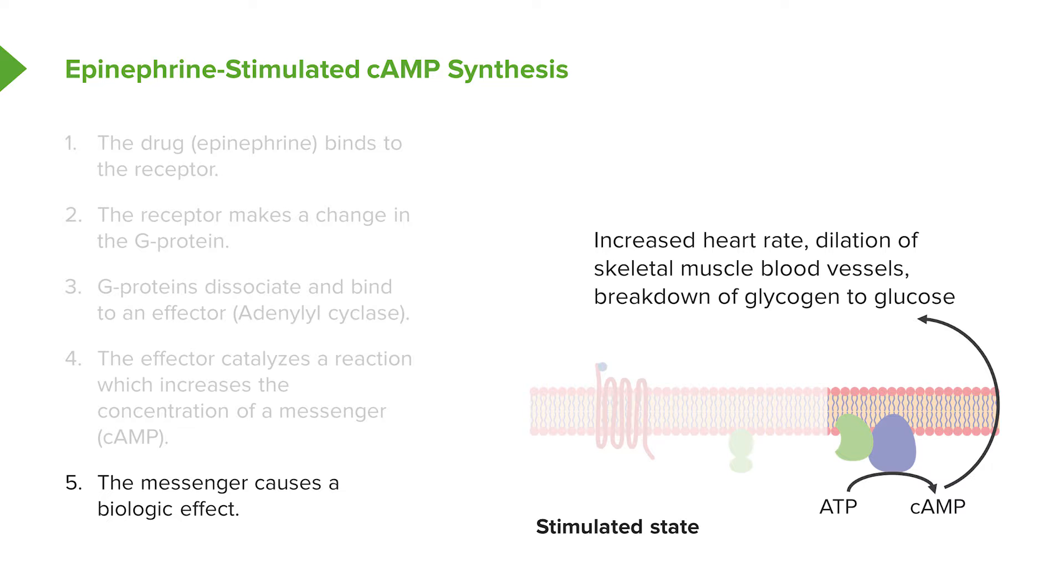Now that cyclic AMP causes a biological effect. In this particular case, we're talking about an increase in heart rate, or a dilation of skeletal muscle, or it could be a breakdown of glycogen to glucose, depending on what you're talking about.